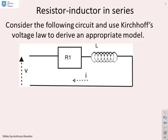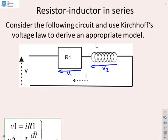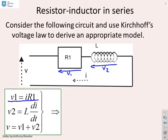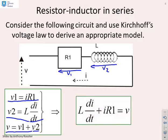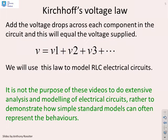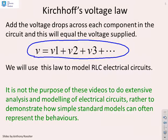For a resistor-inductor circuit in series, we similarly calculate the voltage across the resistor and the voltage across the inductor, then apply Kirchhoff's law. The voltage across the resistor is I·R, the voltage across the inductor is L·di/dt, and Kirchhoff's law gives V = V1 + V2. Combining those three gives the first-order model from the earlier video series. In essence, we add voltages across all components and match to the applied voltage.